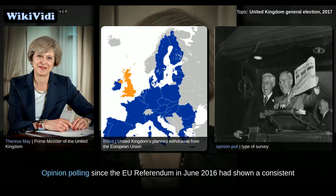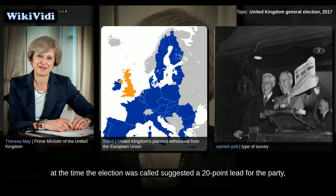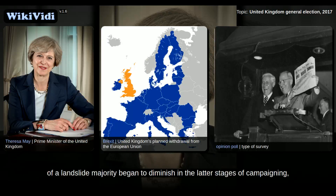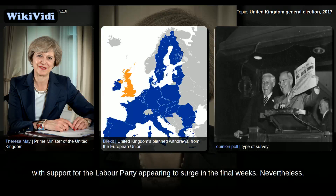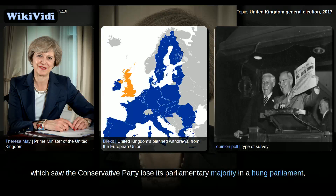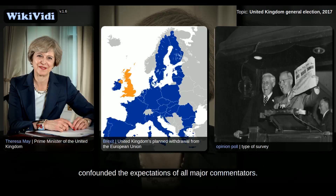Opinion polling since the EU referendum in June 2016 had shown a consistent and growing dominance for the Conservatives over Labour. A number of polls at the time the election was called suggested a 20-point lead for the party, which grew to a 25-point lead in the early weeks of the campaign. Widespread expectations of a landslide majority began to diminish in the latter stages of campaigning, with support for the Labour Party appearing to surge in the final weeks. Nevertheless, the actual election result, which saw the Conservative Party lose its parliamentary majority in a hung parliament, confounded the expectations of all major commentators.